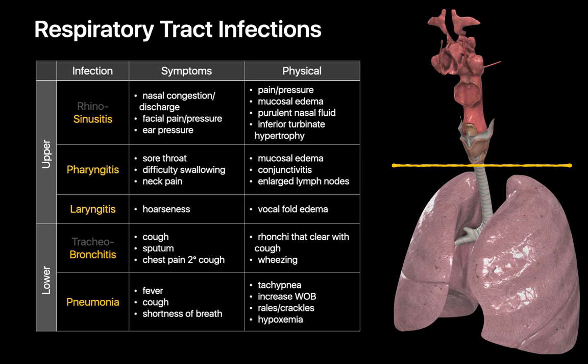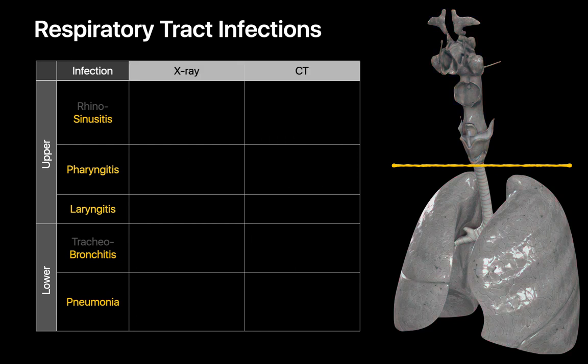So these are, in summary, the symptoms and signs a clinician will use in an office setting when deciding if a patient may have a respiratory tract infection, and if so, which part of the respiratory tract is probably involved. Now let's talk about what a radiologist may see on a chest x-ray or chest CT in these folks.